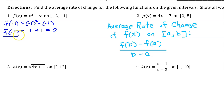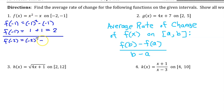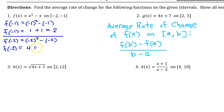Next, we need to find f(−2). Plugging in −2 for x, we have (−2)² minus (−2). And f(−2) is 4 plus 2, which is 6.